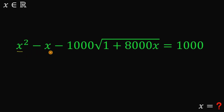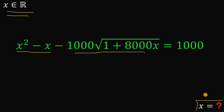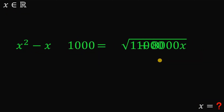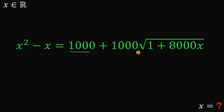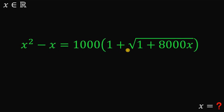Given the equation x squared minus x minus 1,000 multiplied by the square root of 1 plus 8,000x equals 1,000, where x is a real number, we know there are two real values of x. Notice the 1,000 on both sides. We rearrange and factor out the common term 1,000, giving us on the right-hand side 1,000 multiplied by the quantity 1 plus the square root of 1 plus 8,000x.